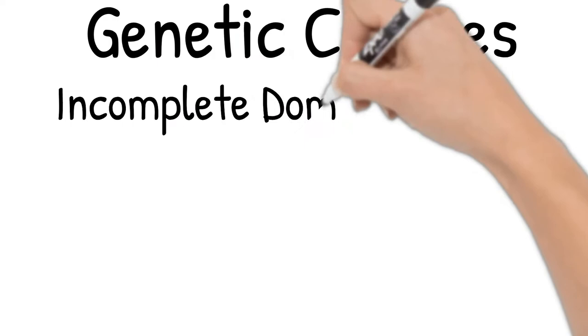Today, we'll look at examples for two types of genetic crosses, incomplete dominance and codominance.